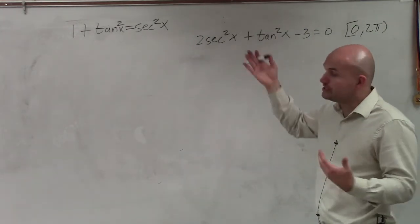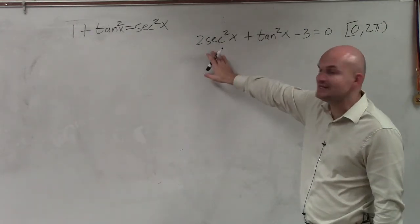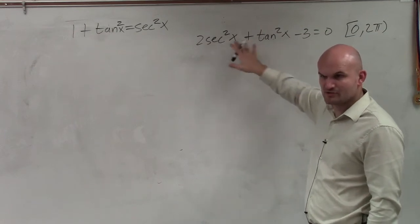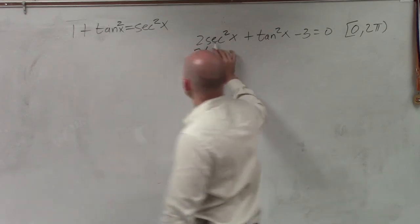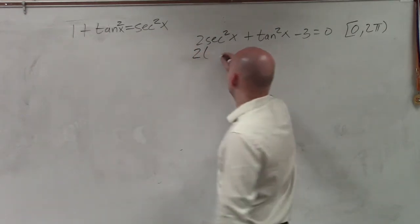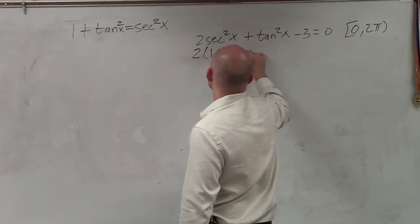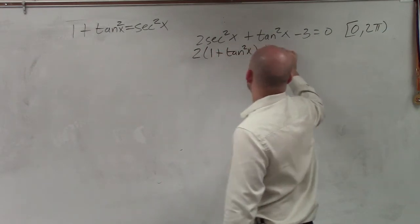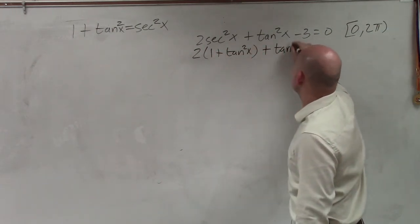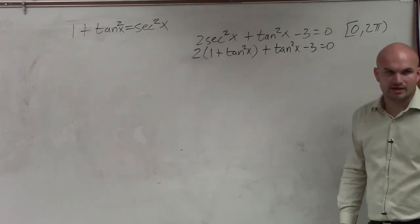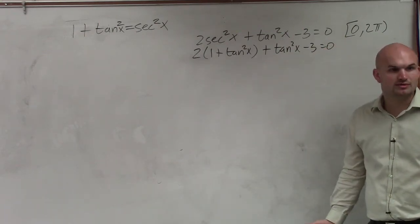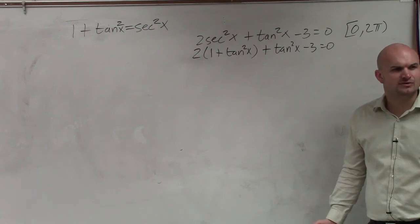But I'm going to actually keep it this way because I want to rewrite secant in terms of tangent. Because I'd much rather try to solve with tangent than try to solve with secant. So what I'll do is sec²x = 1 + tan²x, then plus tan²x - 3 = 0. Does everybody see what I did? I just rewrote secant as 1 + tan².